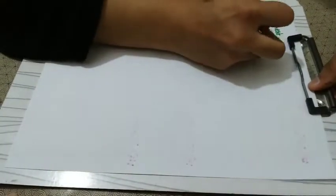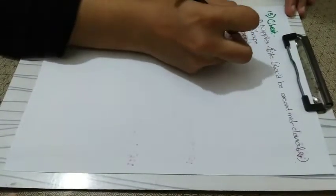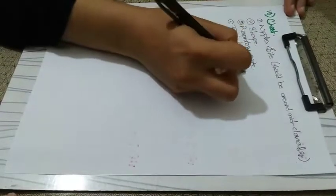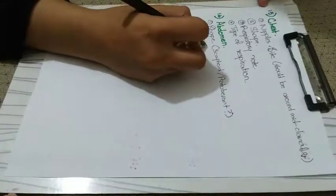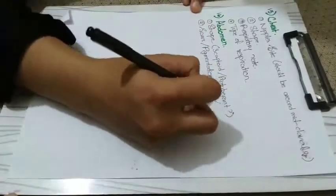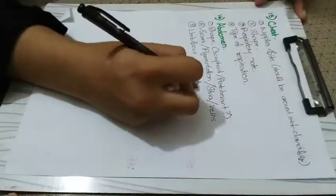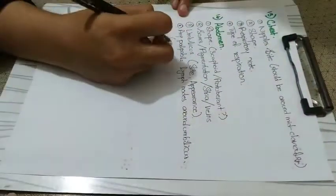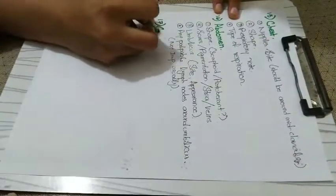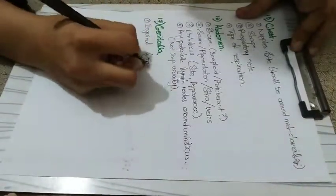Go to the chest and check the nipple site — they should be at the mid-clavicular area and not widely spaced apart. Check the shape of the chest and take the respiratory rate. Check the type of respiration — abdominal or thoracic. Check the abdomen for its shape — whether scaphoid, protuberant, or flat — and any scars, pigmentation, striae, or veins. Check the umbilicus for its site — central — and whether it is inverted, and check for any palpable lymph nodes around it.